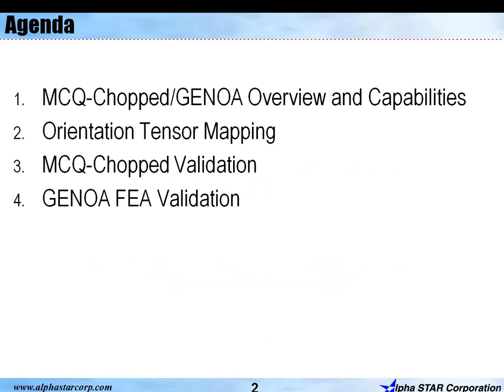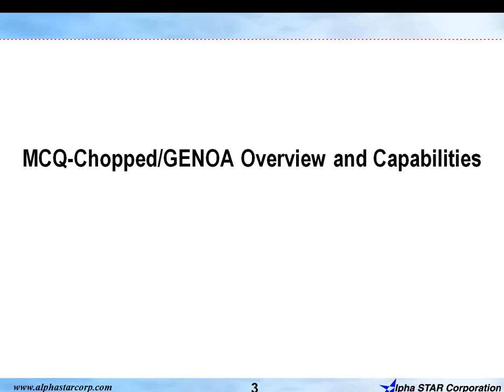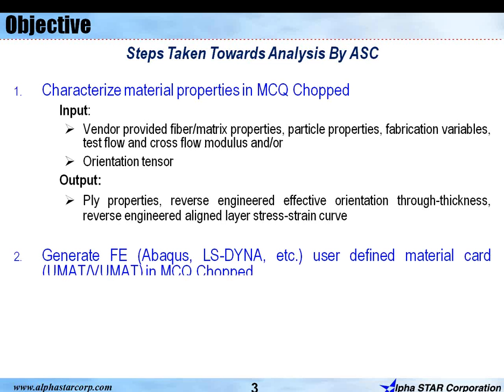The agenda for today's meeting is: MCQ Chopped GENOA Overview and Capabilities, Orientation Tensor Mapping, MCQ Chopped Validation, and GENOA FEA Validation. Starting with the first agenda item: MCQ Chopped GENOA Overview and Capabilities.